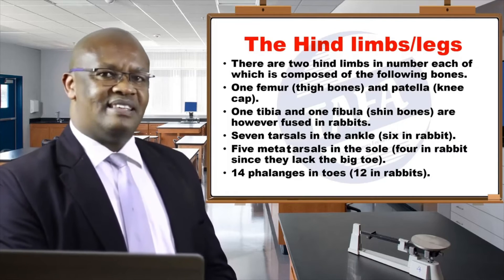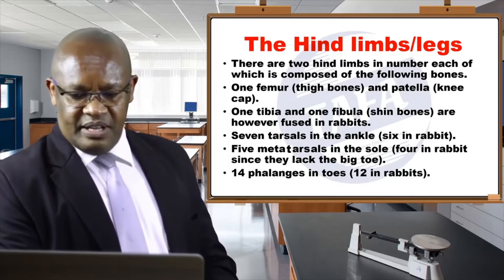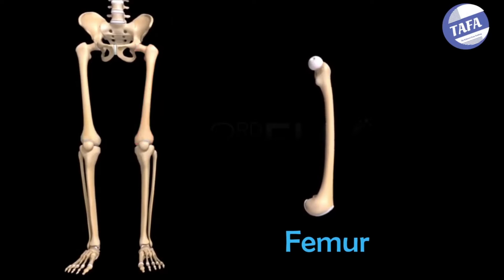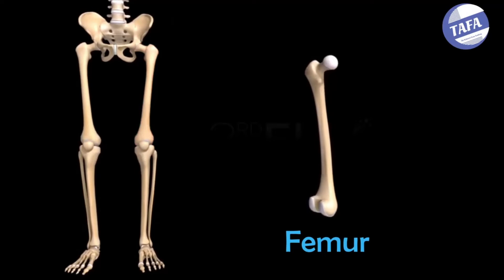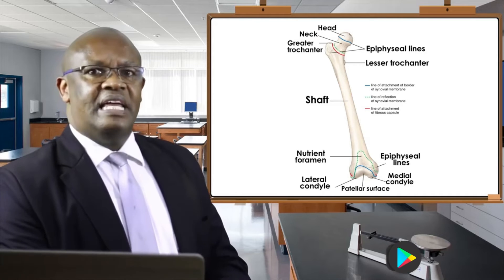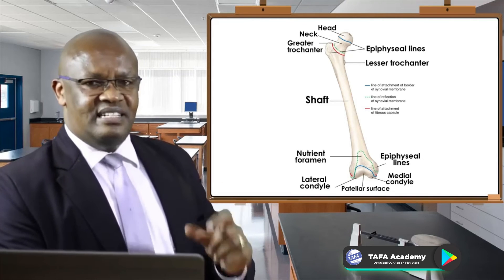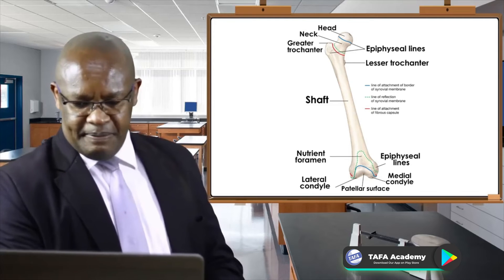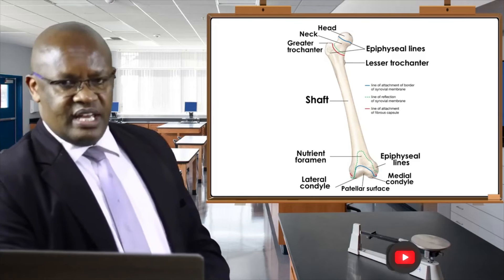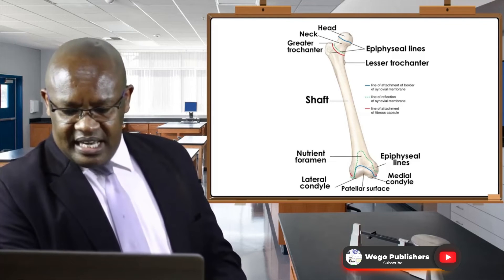After mentioning those bones, I want us to take each one and say something about them. The first is the femur. On the board I have displayed the femur for you, and if you look at it closely you find that it resembles the humerus found in the forelimb — they have almost similar features, but if you are keen you will note a slight difference between the femur and humerus. The femur has a head, a shaft, and a distal head which has condyles, just like the humerus.